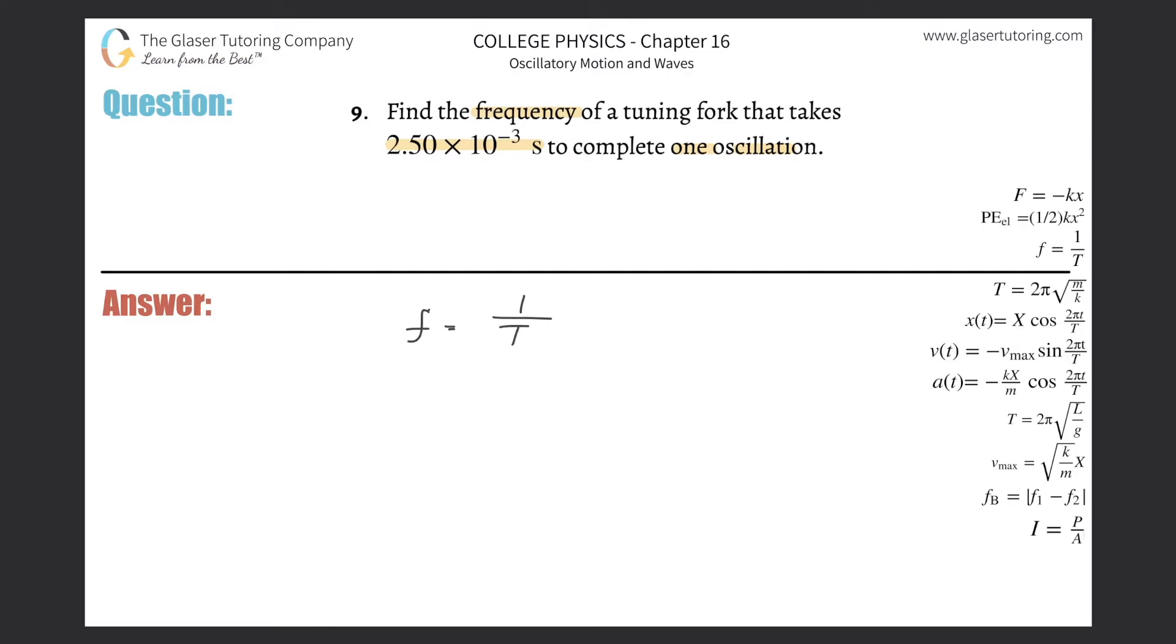We need explaining of what a period is. Basically a period is simply the time it takes, the time of one cycle. You can call this oscillation, you can call this wave, it doesn't really matter. It's the time of one particular cycle or one oscillation of something.